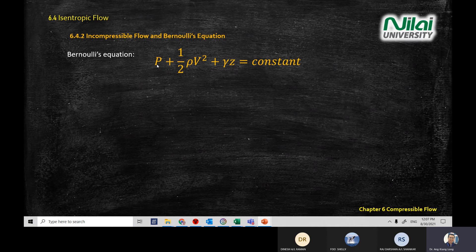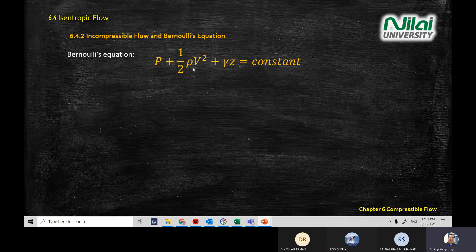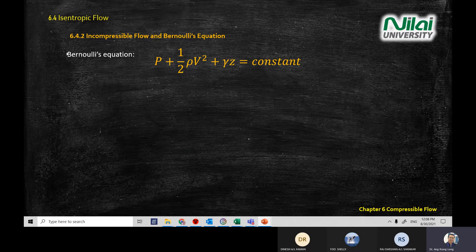This is the equation that you learn in the introduction to fluid mechanics. Bernoulli equation gives you pressure P, plus the kinetic energy half rho v squared, plus the potential energy component — specific weight z, or mgh — equal to constant. So pressure energy, kinetic energy, and potential energy equal to constant. This is the main component of Bernoulli equation.